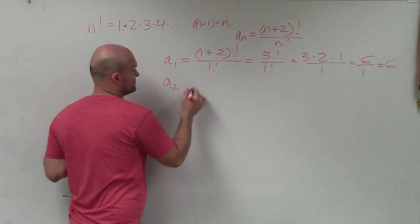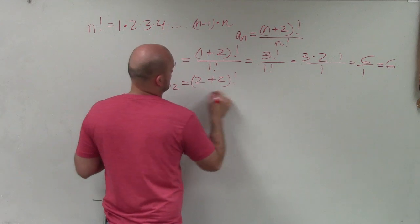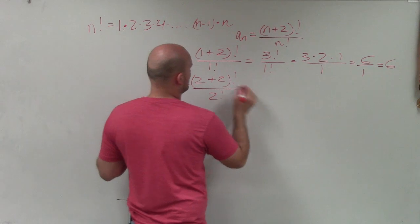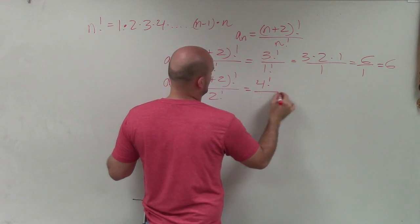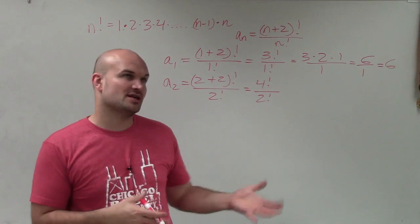Now let's do a sub 2. So now I'm going to plug in a 2. OK, so therefore this becomes 4 factorial over 2 factorial. Now I'm going to kind of show you this one step, and then we'll start to find the next one.